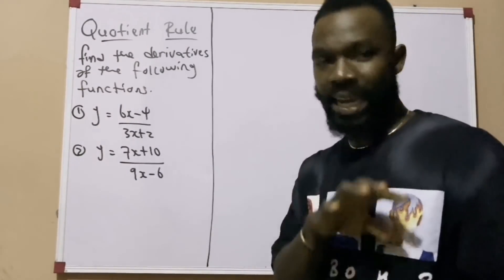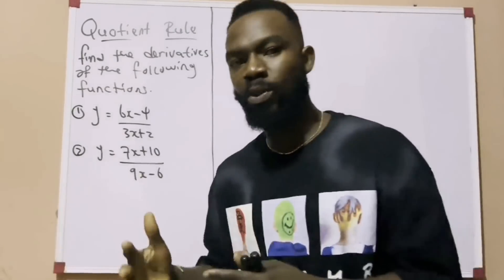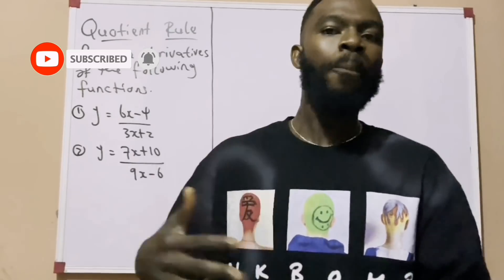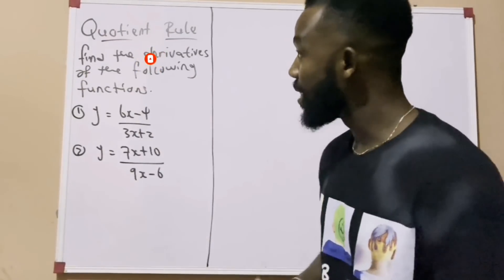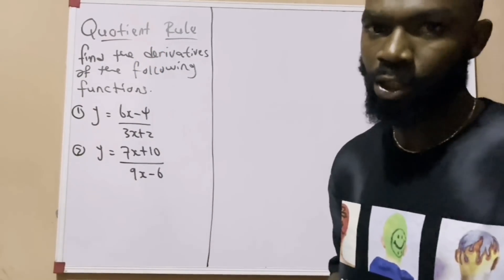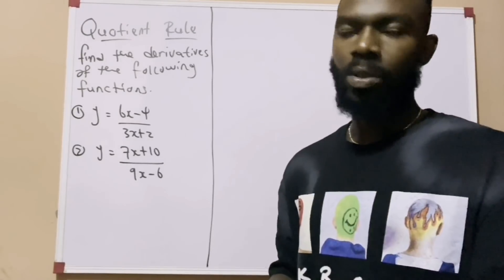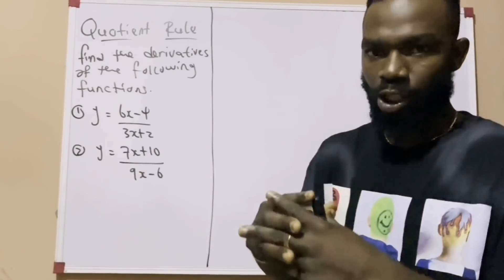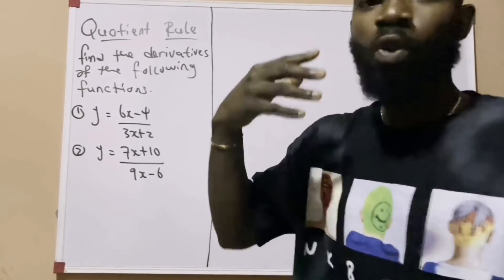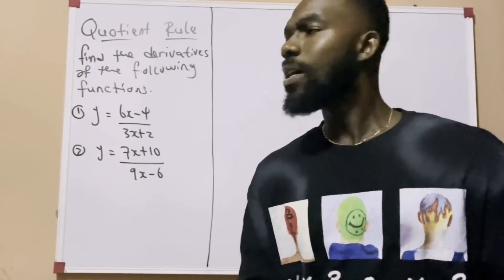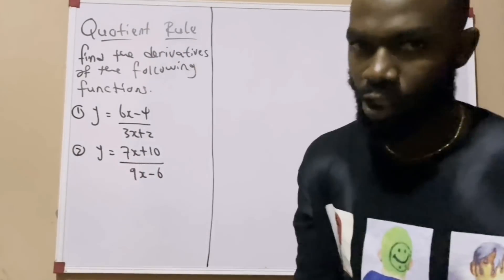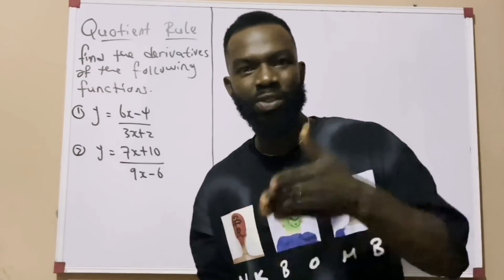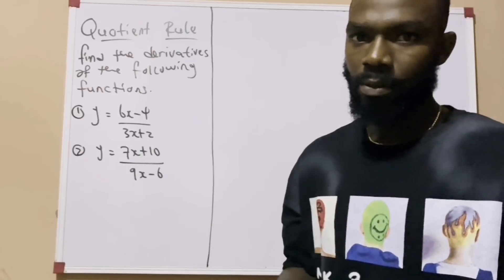Before I begin, let me tell you the difference between the product rule and the quotient rule. In the chain rule, there is just one function — u. In the product rule, there are two functions and these two functions multiply each other. Now, what makes the quotient rule different is that from the word 'quotient' it means division, so quotient is also made up of two functions, but this time the functions divide each other.